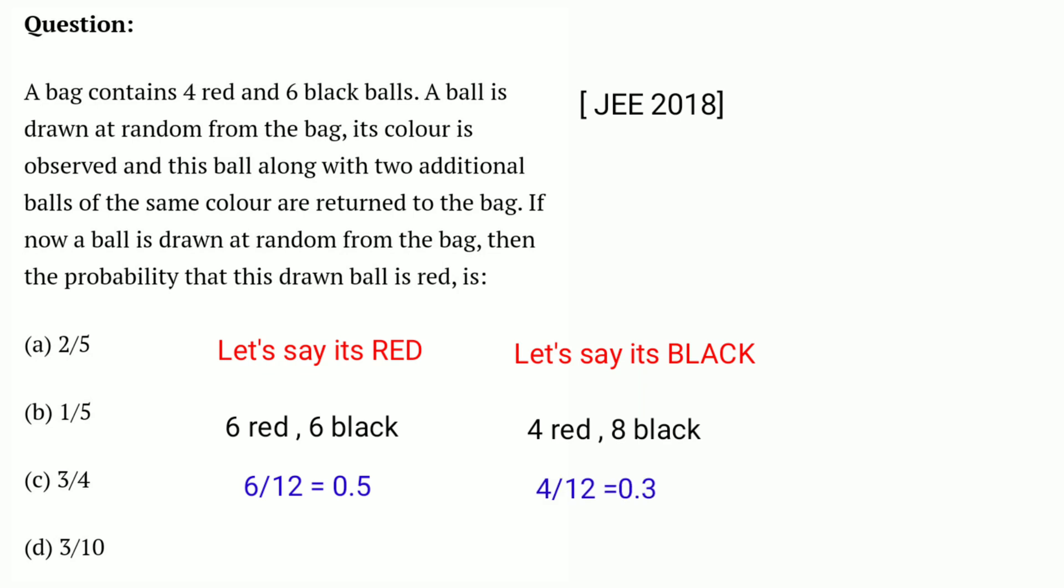The minimum probable case is 4 by 12, which is 1 by 3, because there are 4 red balls. So we can calculate the red ball probability in two cases. Now, the probability that this drawn ball is red: minimum is 1 by 3 and maximum is 1 by 2. So the answer should be between these two values. In the options, 2 by 5 is 0.4, which falls between 0.33 and 0.5.